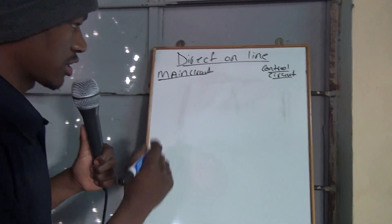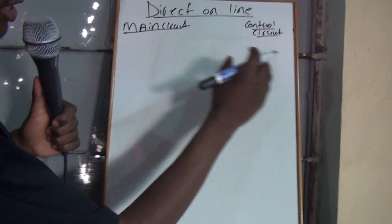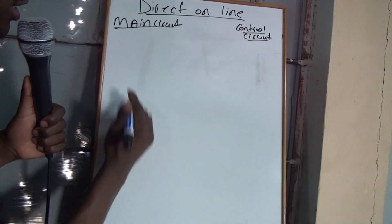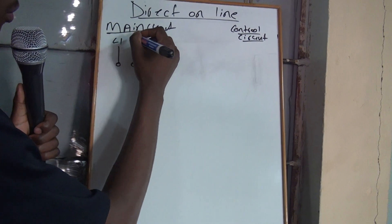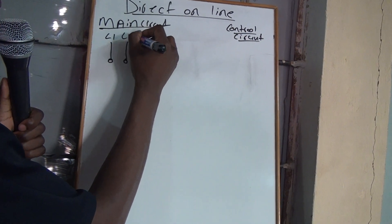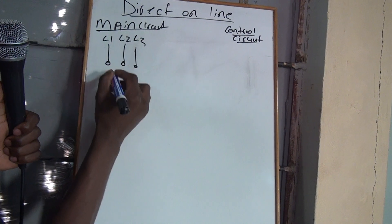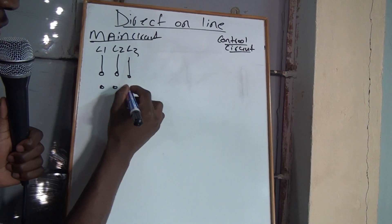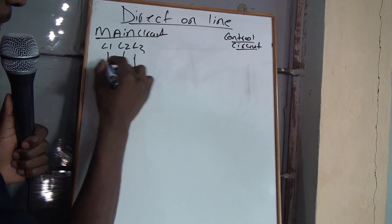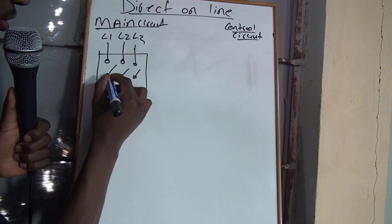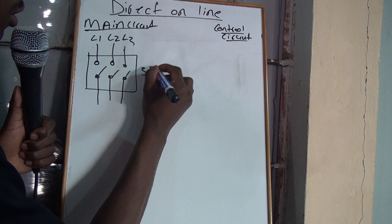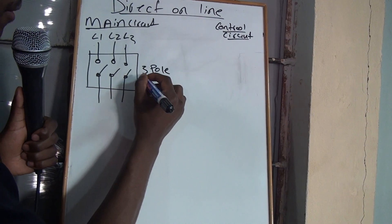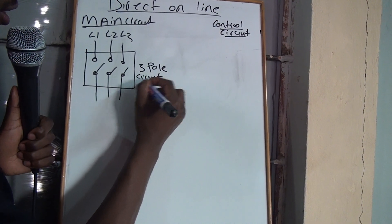So this is how your direct online is, this is your main circuit, and there I will draw the control circuit. And then, the first thing that we'll have is your triple pole circuit breaker. These are your supply. And then, we're going to have a circuit breaker here. A triple pole circuit breaker.